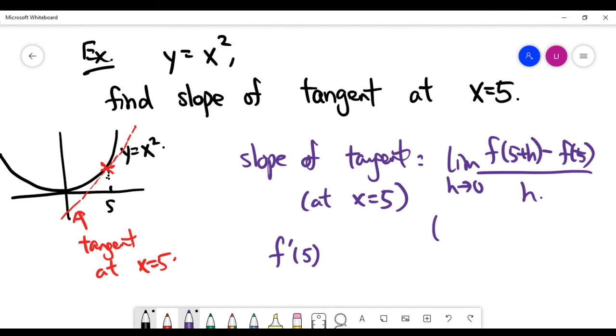Please recall from the last page, we have done it already that f prime of x is actually 2x. So we can just use it directly. The slope is just 2 times 5 because I replaced x by 5. So the slope is actually 10.